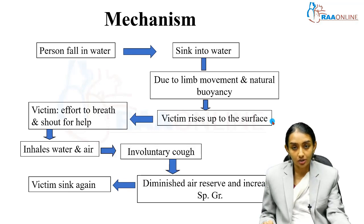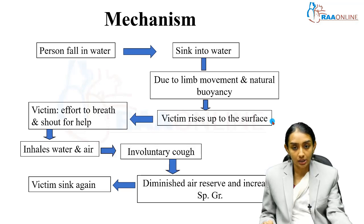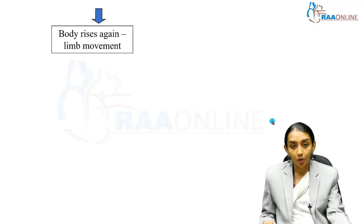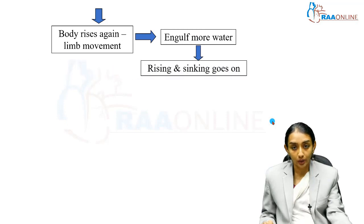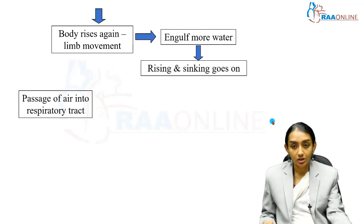The person first falls into the water, sinks, then tries to come up to the surface by limb movement or natural buoyancy, causing them to rise. As soon as they reach the surface, they try to breathe and shout for help. When the mouth and nostrils open, there is inhalation of air along with water, which goes down into the airways, resulting in involuntary cough. This leads to diminished air reserve and increased specific gravity, causing the victim to sink again. This cycle goes on as a vicious cycle, with the body rising to the surface, more engulfment of water along with air, and the rising and sinking alternating on and on.